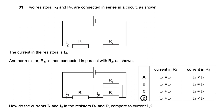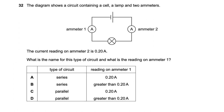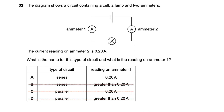Question thirty-two: a circuit has a cell, a lamp, and two ammeters. Ammeter two reads 0.20 A. Options C and D say it is a parallel circuit — eliminated, it is a series circuit. In a series circuit, current is the same throughout. So ammeter one also reads 0.20 A. Option A is the right answer.